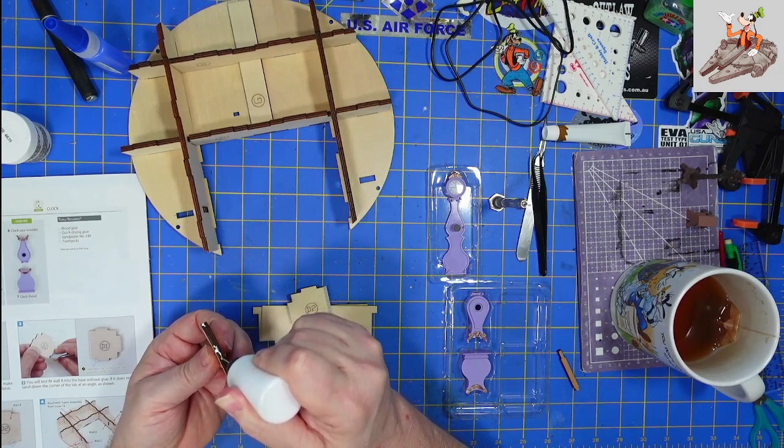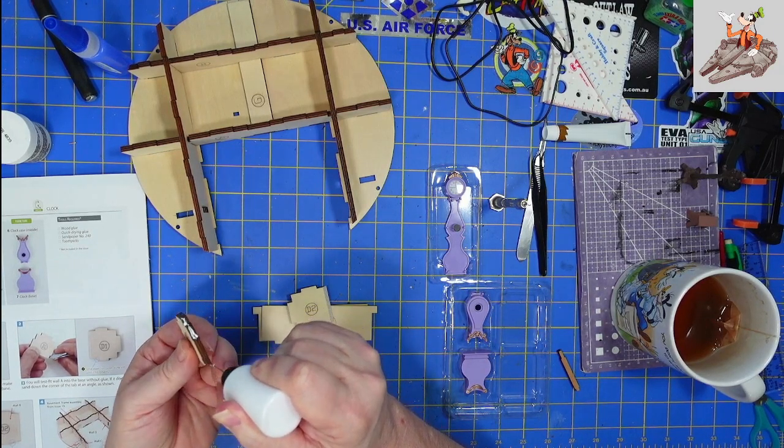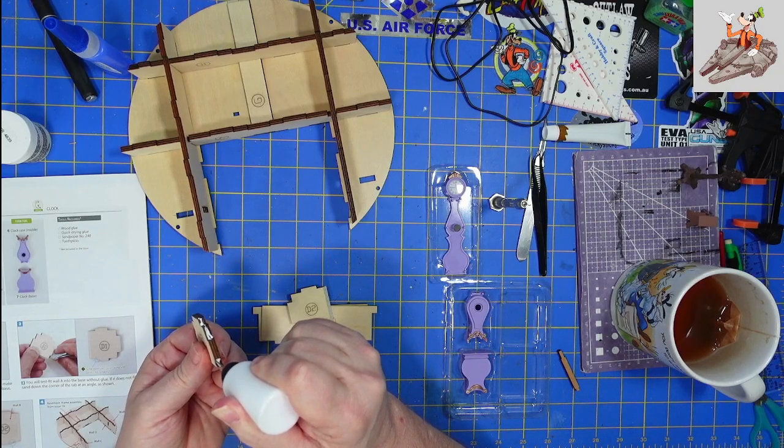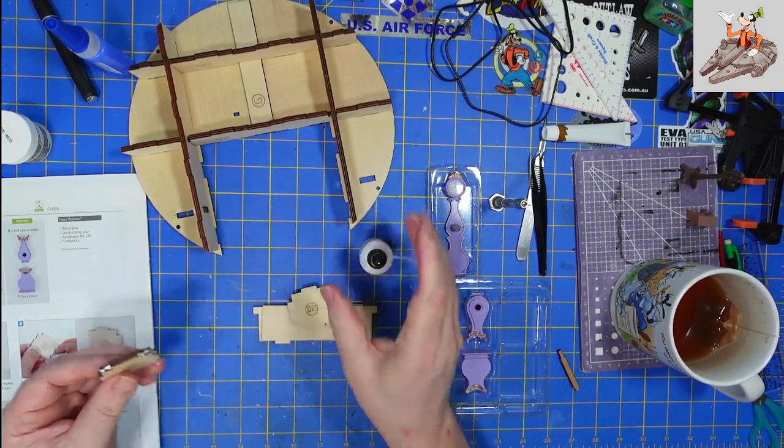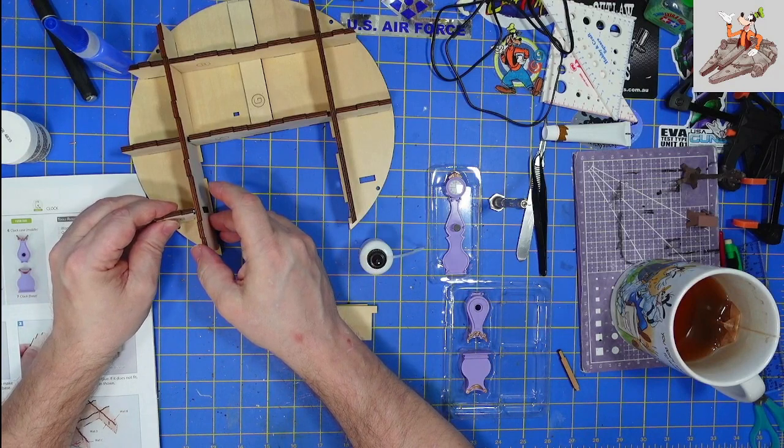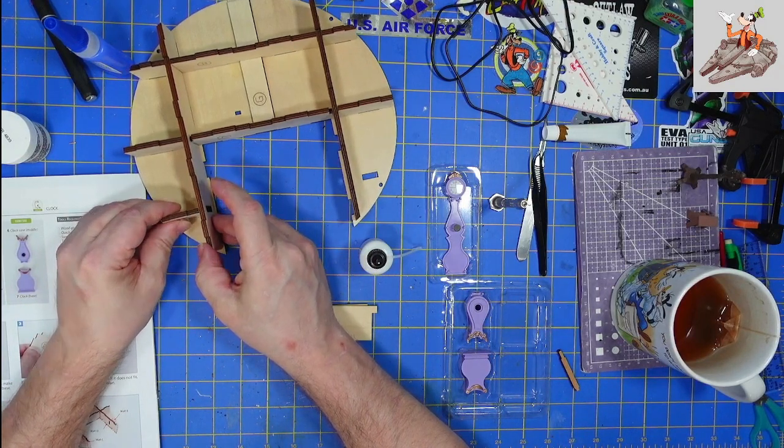Test fit in the base without glue. You will test it. If it does not fit, sand down the corner of the tab is at an angle. It shouldn't fit, but I'm stubborn and I can get it pushed in there. So let me put glue on here and on here.